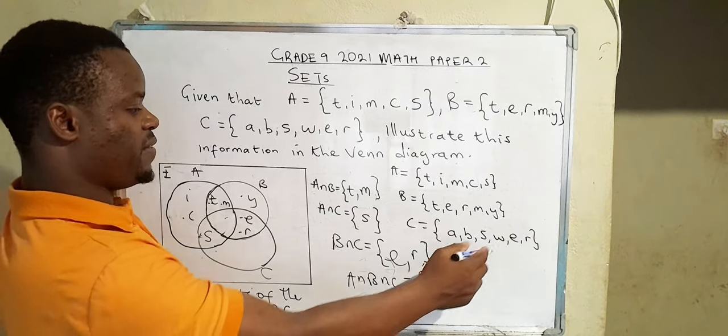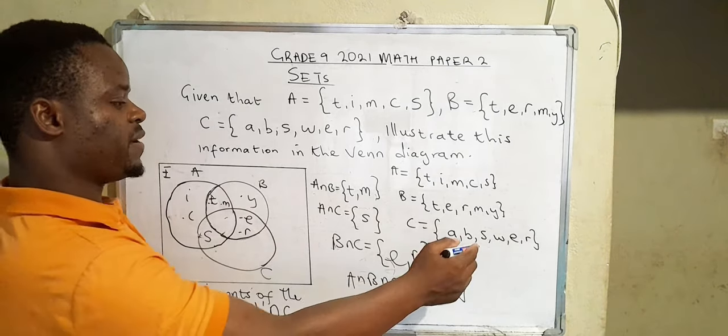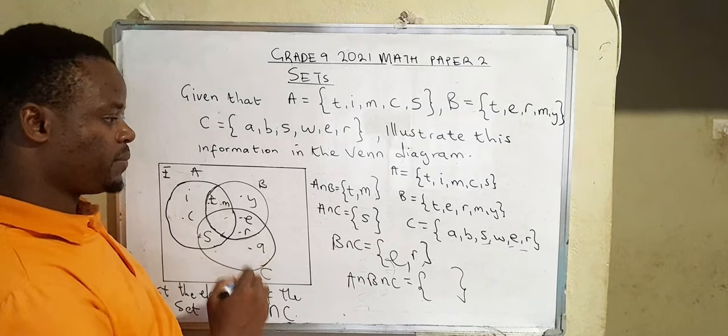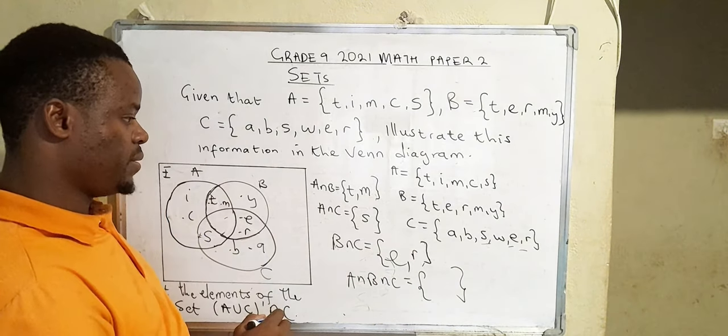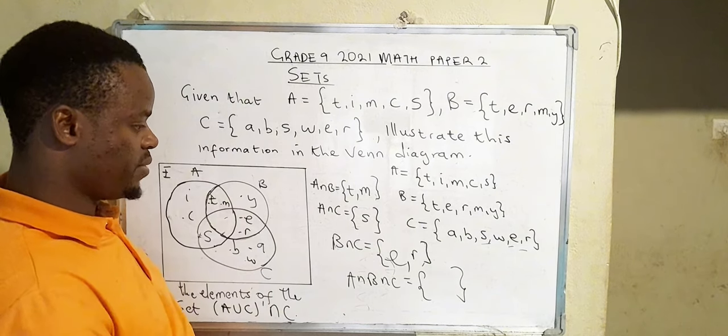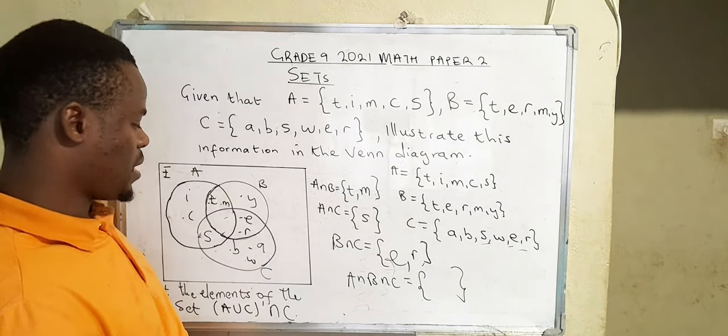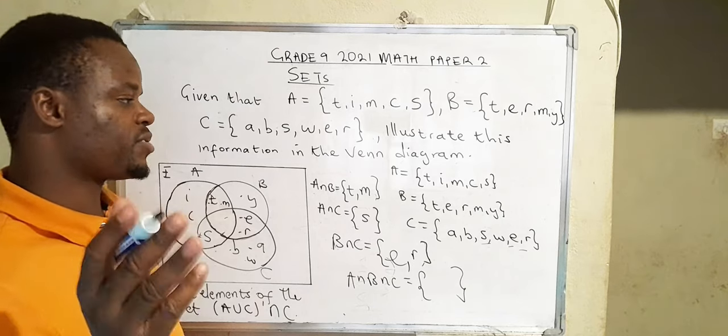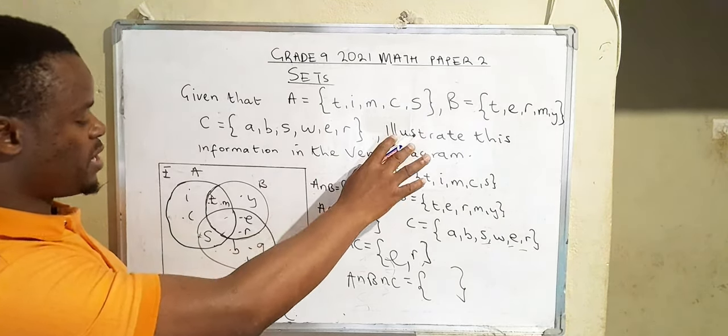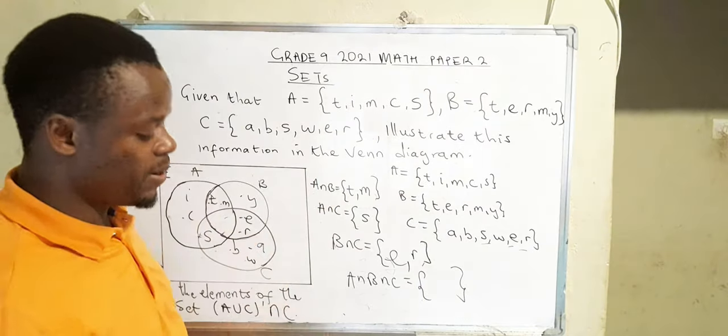We check what has been written so far. That is E, we have R, we also have S. So what remains is A, B, and W. So we've actually illustrated this information in the Venn diagram.